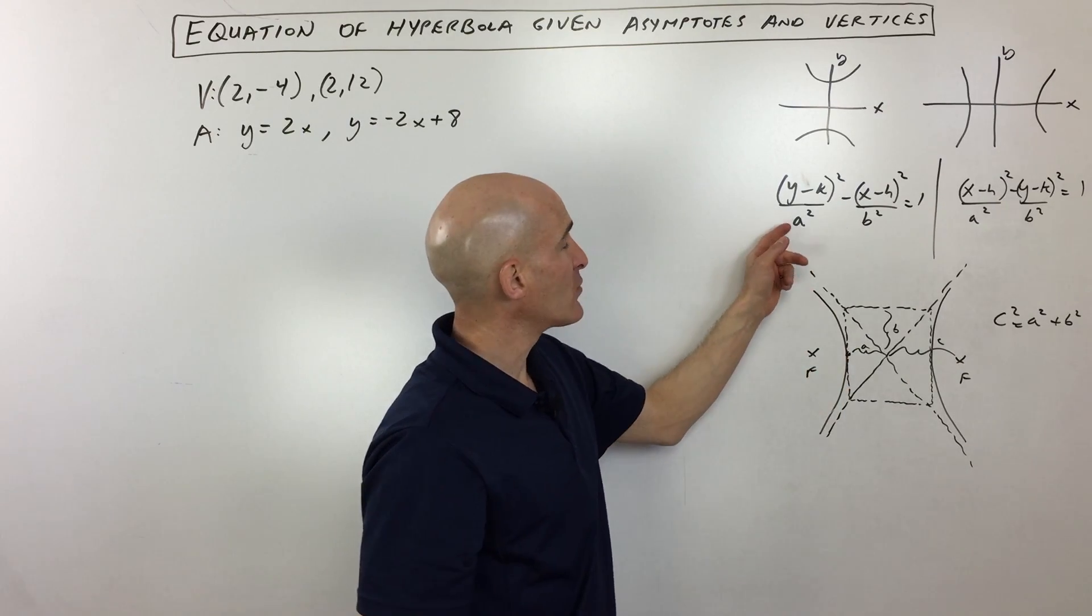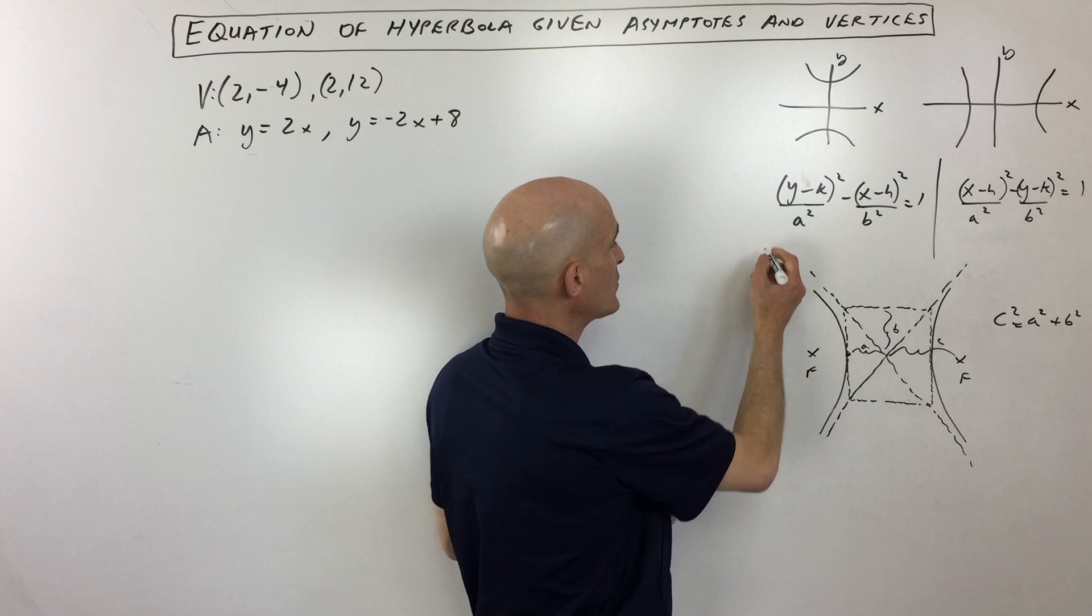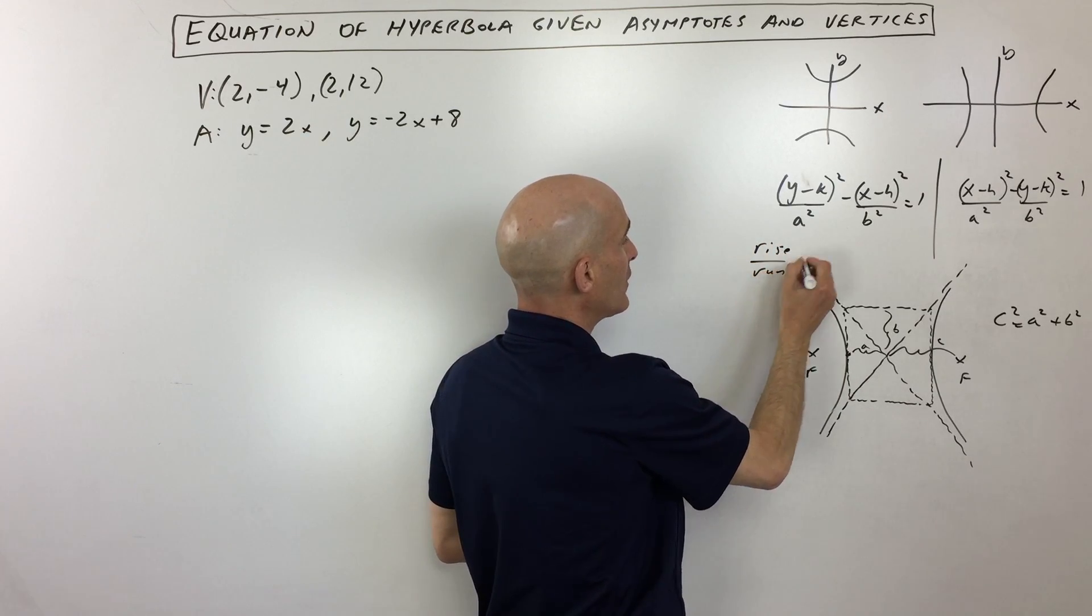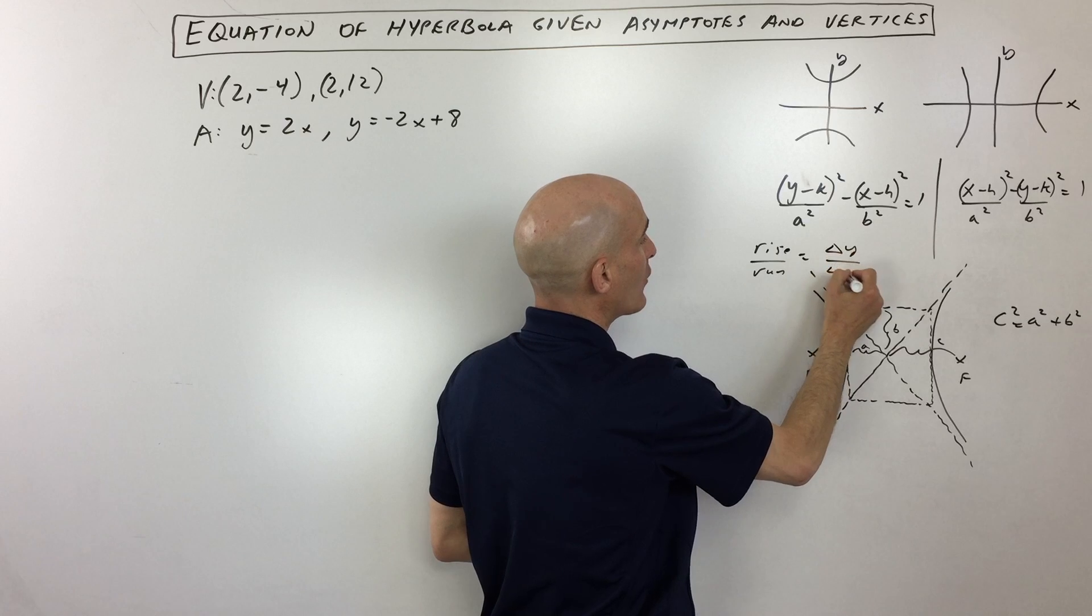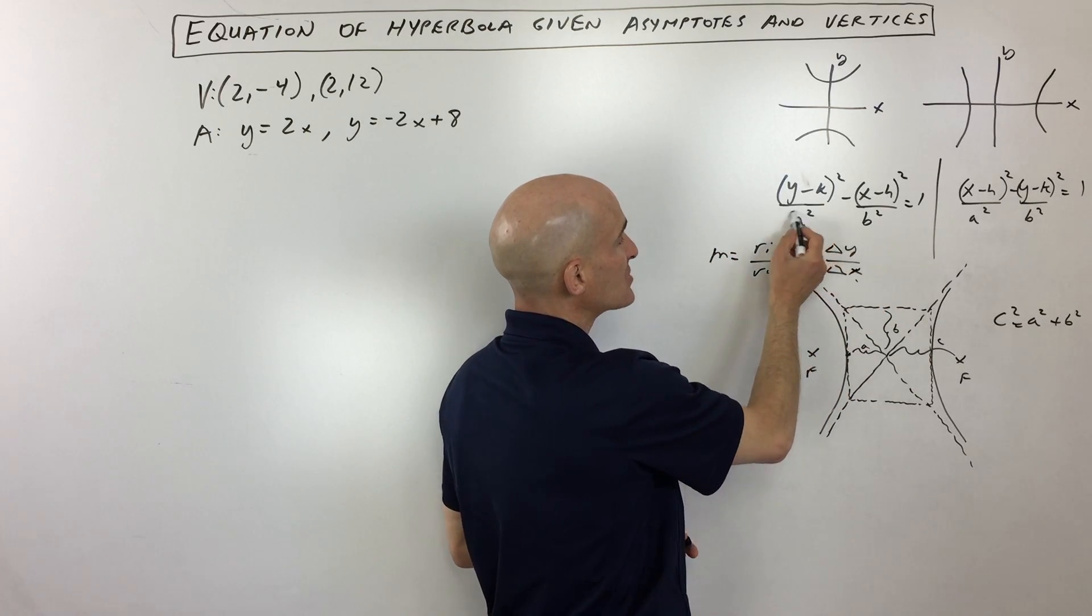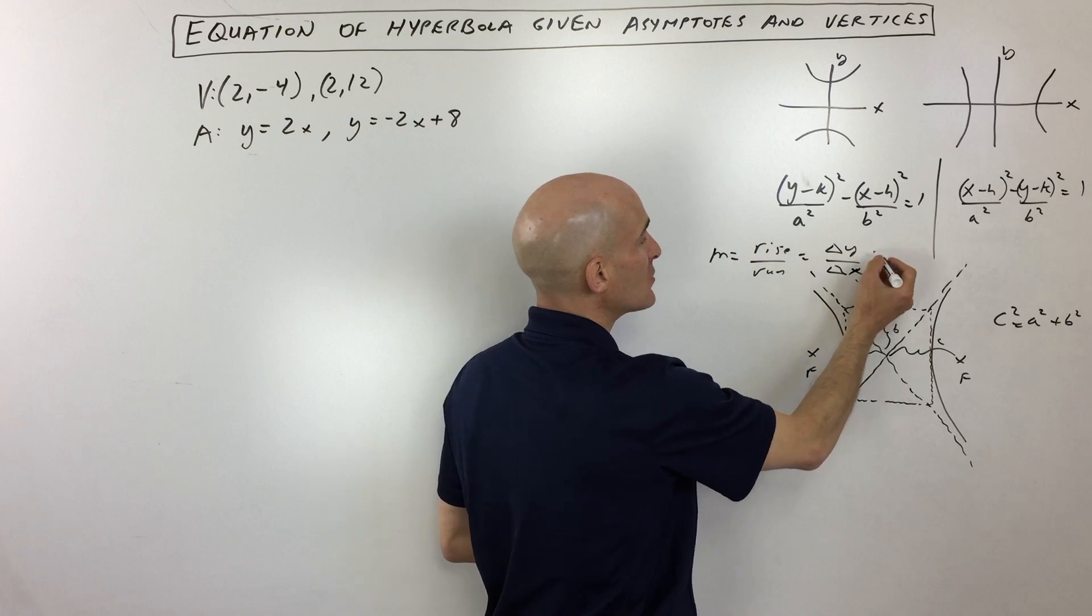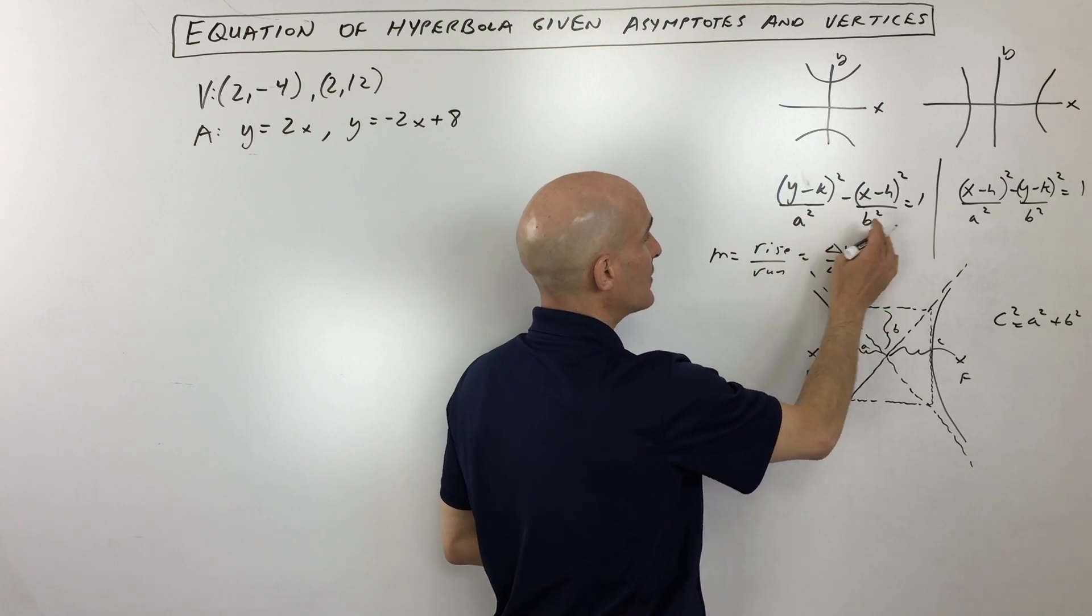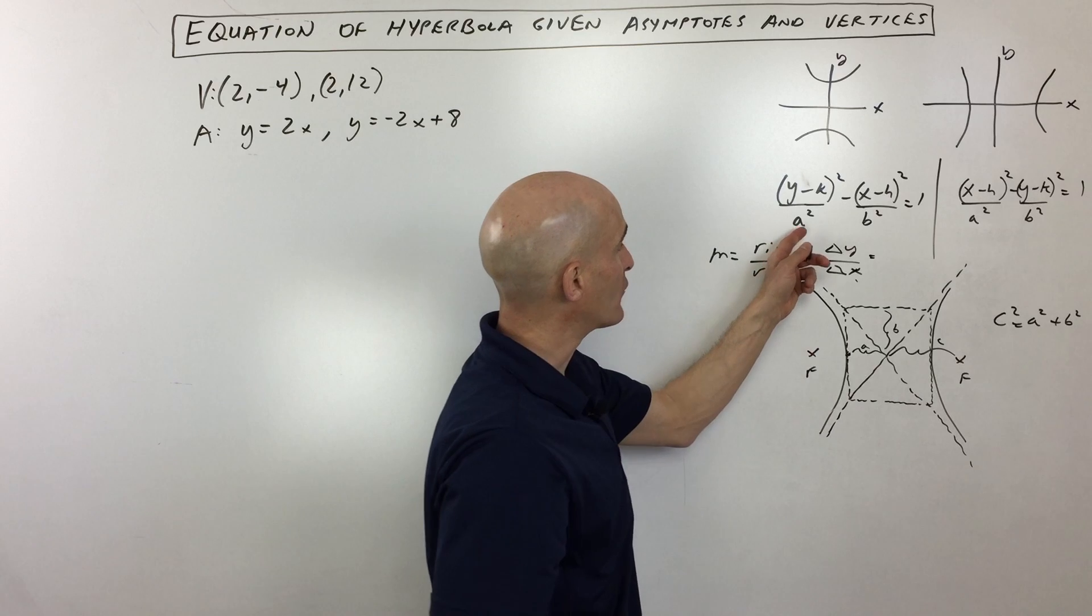So an easy way to remember this is that when you think of the slope, slope is the rise over the run, which is really like the change in y over the change in x, right? And when you think about the change in y, this number here that's underneath the y is going to be your rise, and the number underneath the x here is going to be your run.